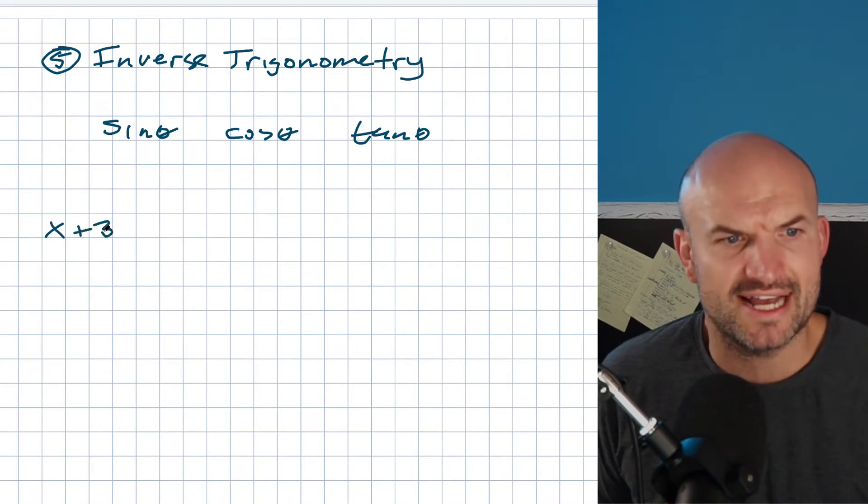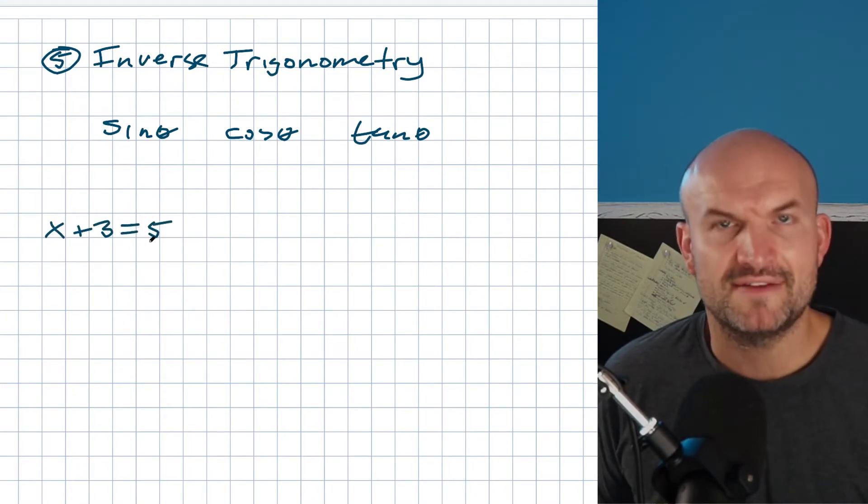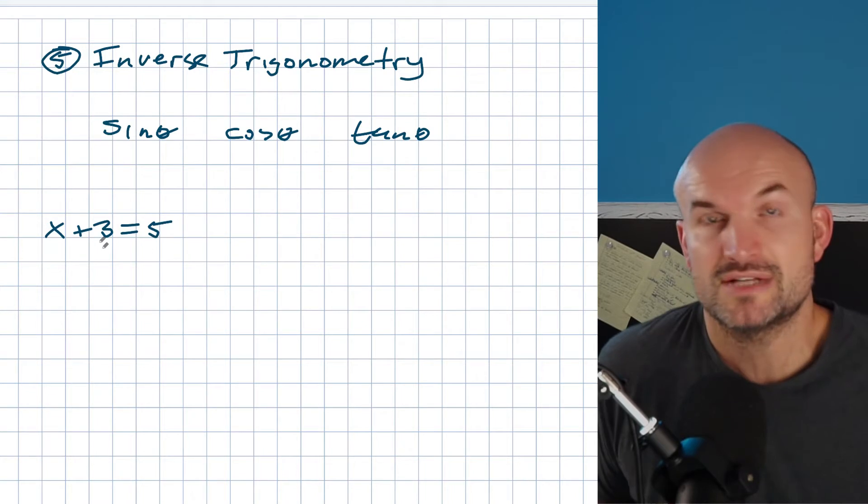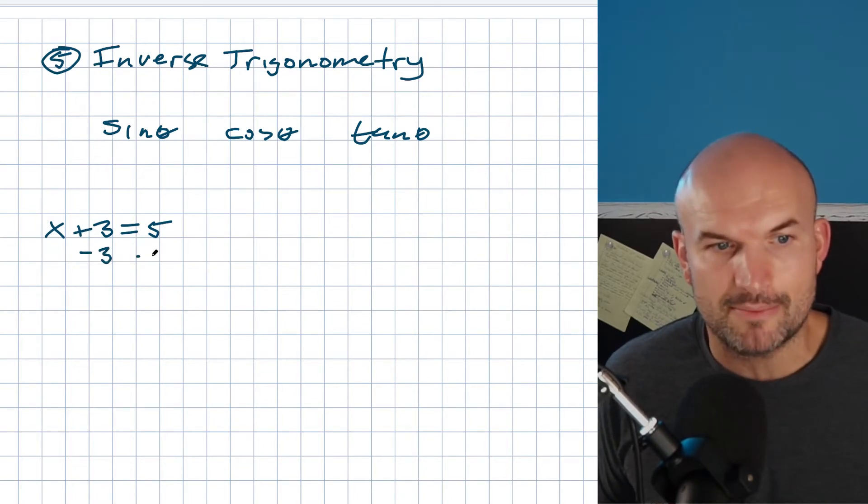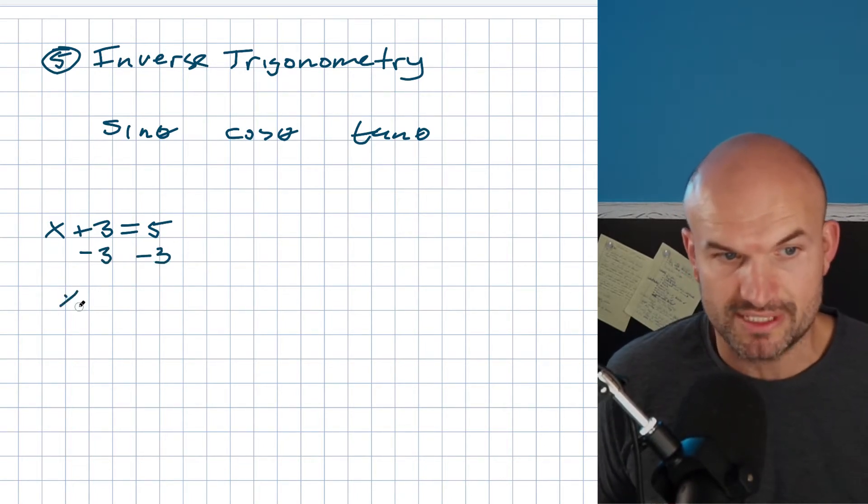Quick review. If I had x plus 3 equals 5 and I said solve this, you're going to use your inverse operations. I want to undo what is happening here. So if I have x plus 3, to undo adding 3 I'm going to use the inverse operation of addition, which in this case is subtraction. So 5 minus 3 is going to be 2.